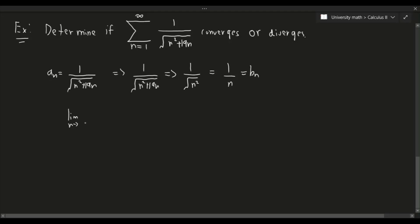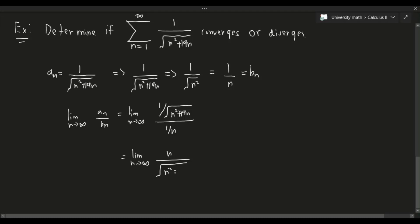We compute the limit as n approaches infinity of aₙ over bₙ: that's (1 over the square root of n² + 19n) divided by (1 over n), which equals the limit of n over the square root of (n² + 19n). Factoring n² inside the root gives n over n times the square root of (1 + 19/n). The n terms cancel and we get 1 over the square root of 1, which equals 1.